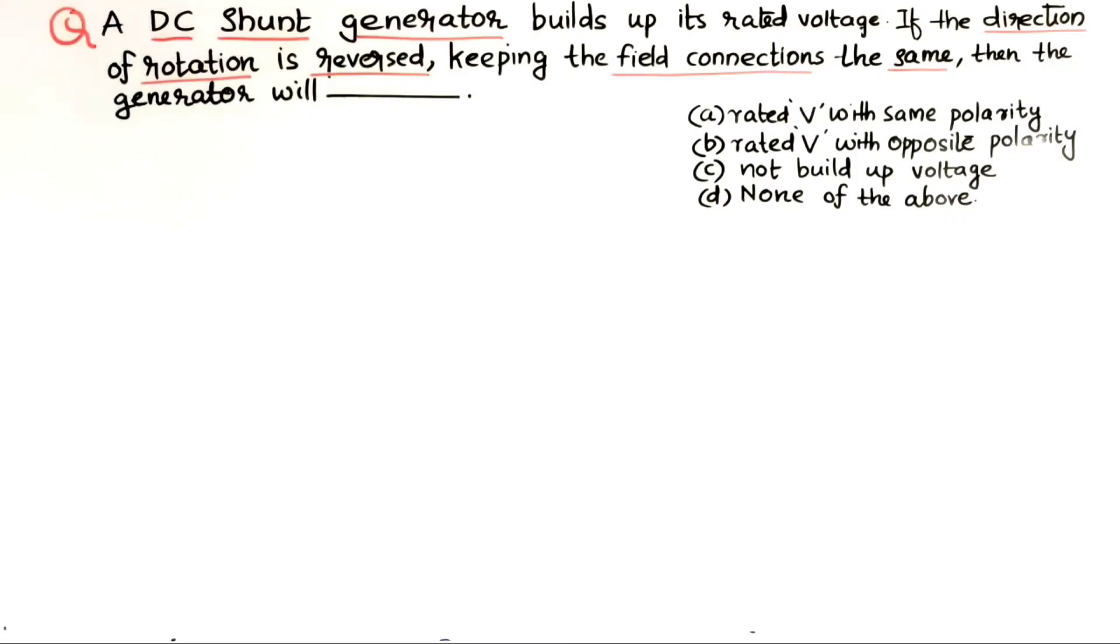then the generator will develop rated voltage with the same polarity, rated voltage with the opposite polarity, will not develop any voltage, or none of the above.